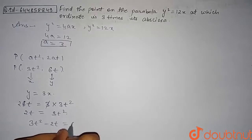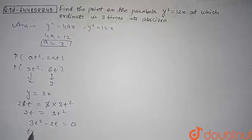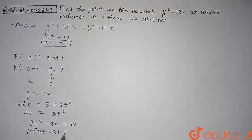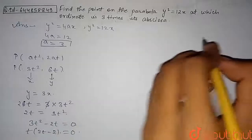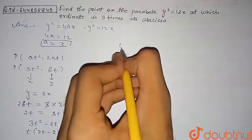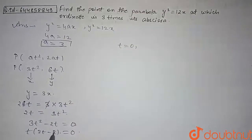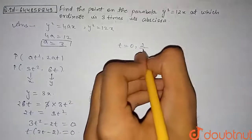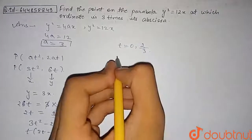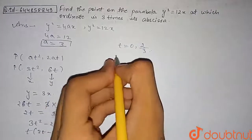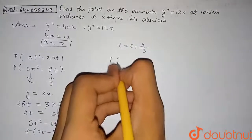From 2t = 3t², we rearrange to get 3t² − 2t = 0. Taking t common: t(3t − 2) = 0. So t = 0 or t = 2/3.